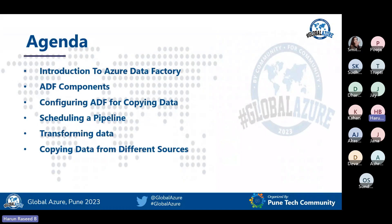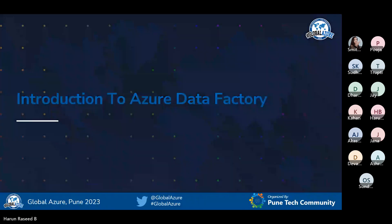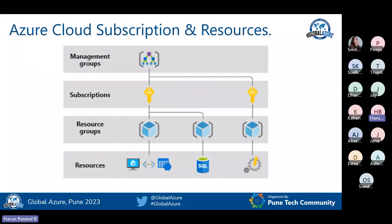Today's agenda: we are going to see about Data Factory, its components, how we can configure the copy data activity, how we can schedule it, and basic transformations. This is about the Azure structure. The hierarchy comes from management group — a single management group can have multiple subscriptions, and each subscription can have multiple resource groups. Inside the resource group, we will be creating our resources using ARM templates. The resource group is nothing but a logical container. Azure Data Factory is also one such resource.